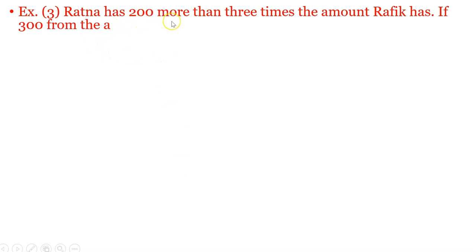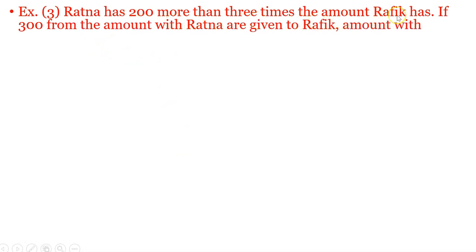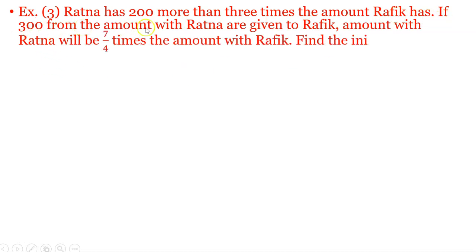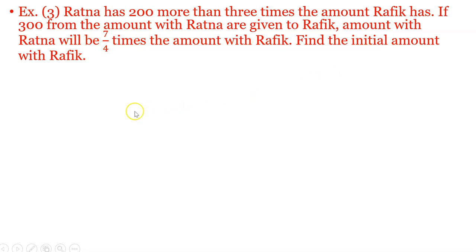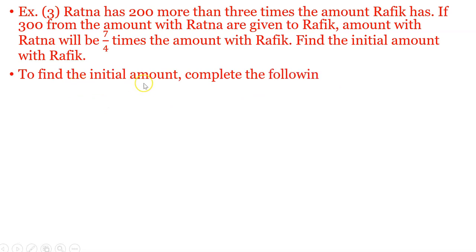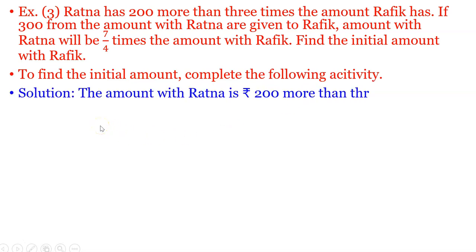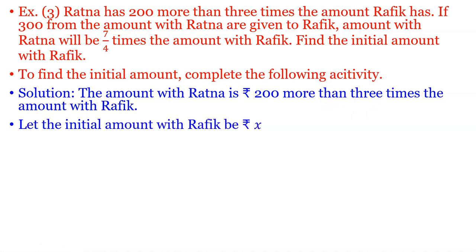Next example. Ratna has Rs.200 more than 3 times the amount Rafiq has. If Rs.300 from Ratna's amount are given to Rafiq, the amount with Ratna will be 7 by 4 times the amount with Rafiq. Find the initial amount with Rafiq. Let the initial amount with Rafiq be Rs.x. Therefore Ratna has 3x plus 200.